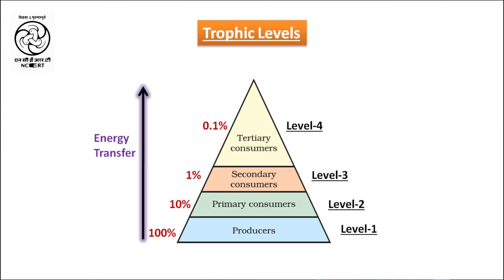Since so little energy is available for the next level of consumers, food chains generally consist of only three or four steps. The loss of energy at each trophic level is so great that very little usable energy is present after the fourth trophic level.